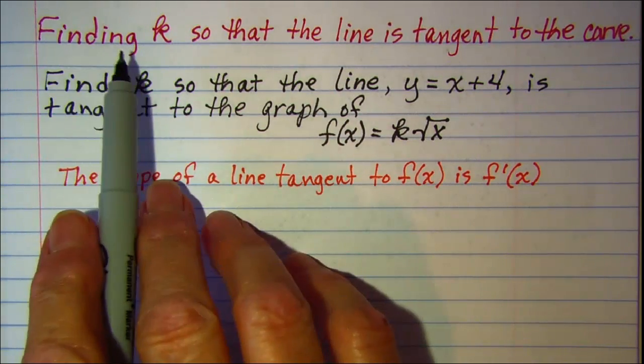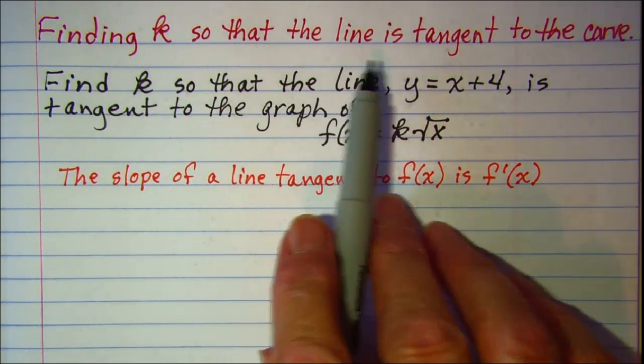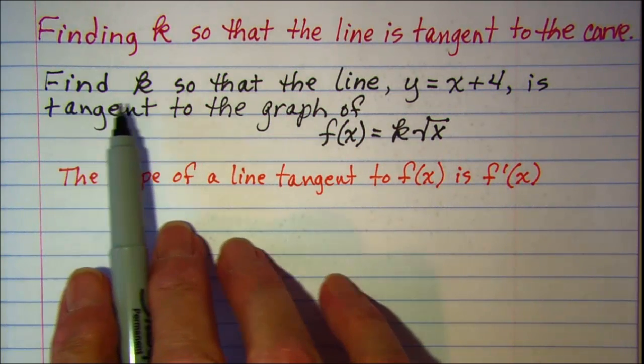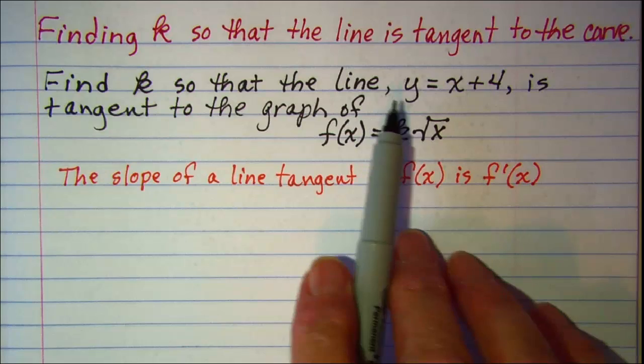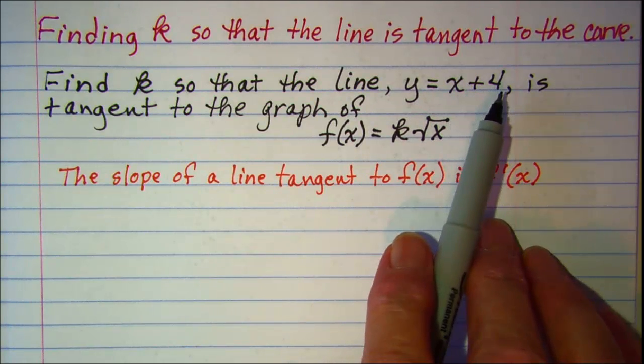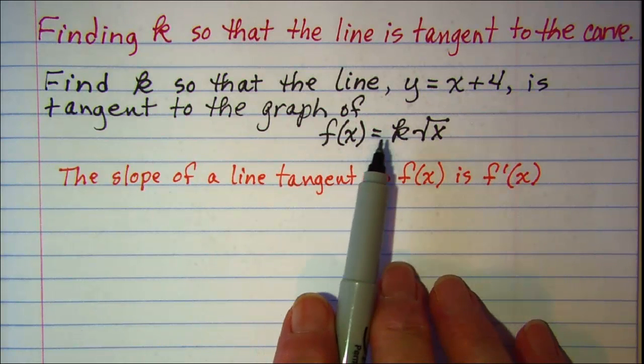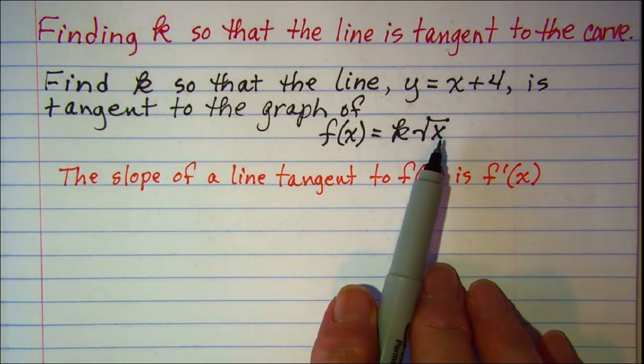In this video we'll be finding k so that the line is tangent to the curve. Our problem is to find k so that the line y equals x plus 4 is tangent to the graph of f of x equals k times the square root of x.